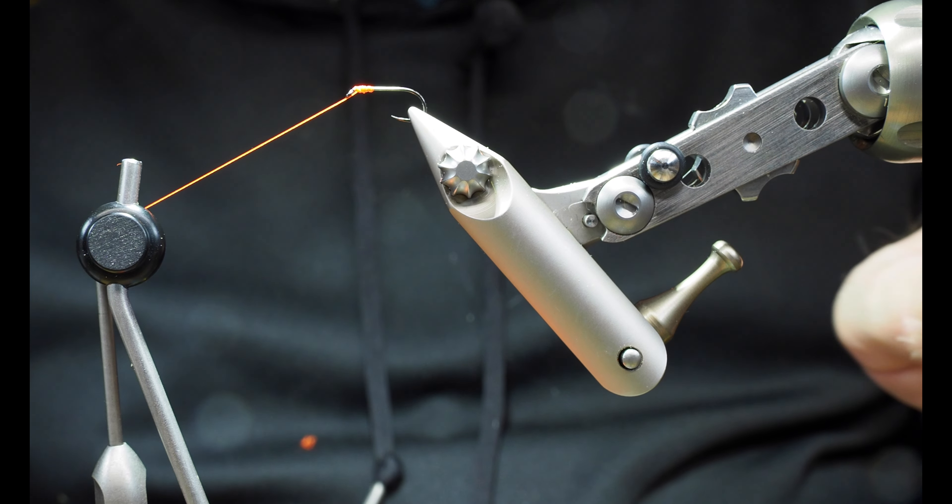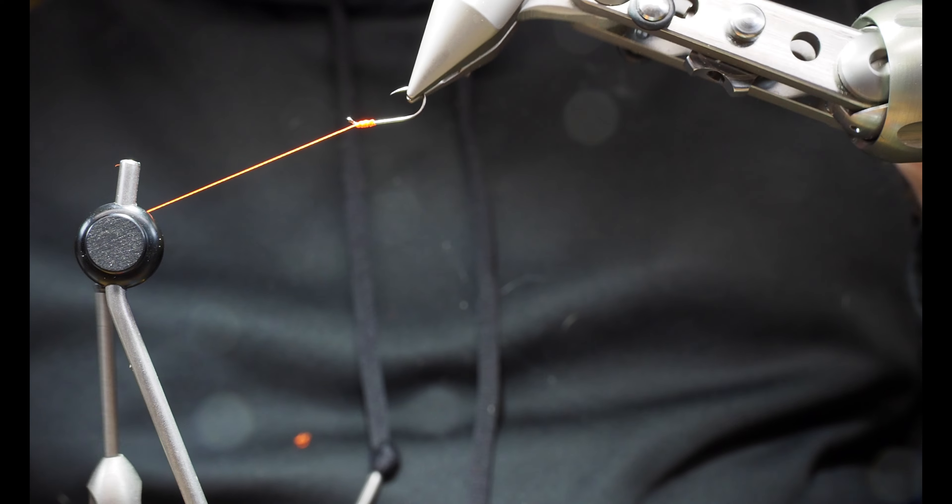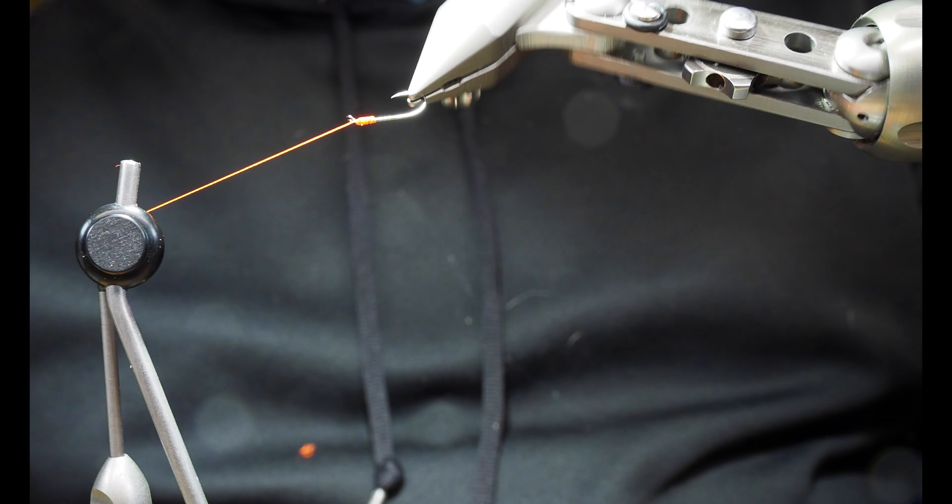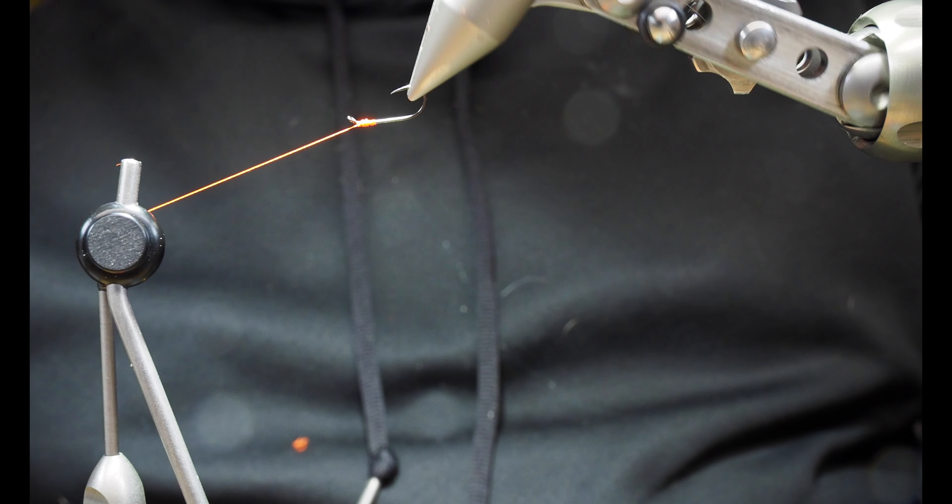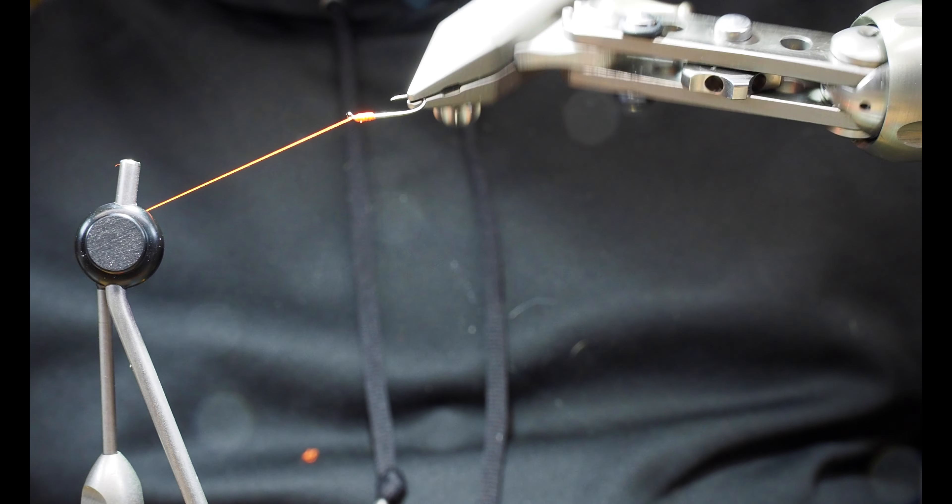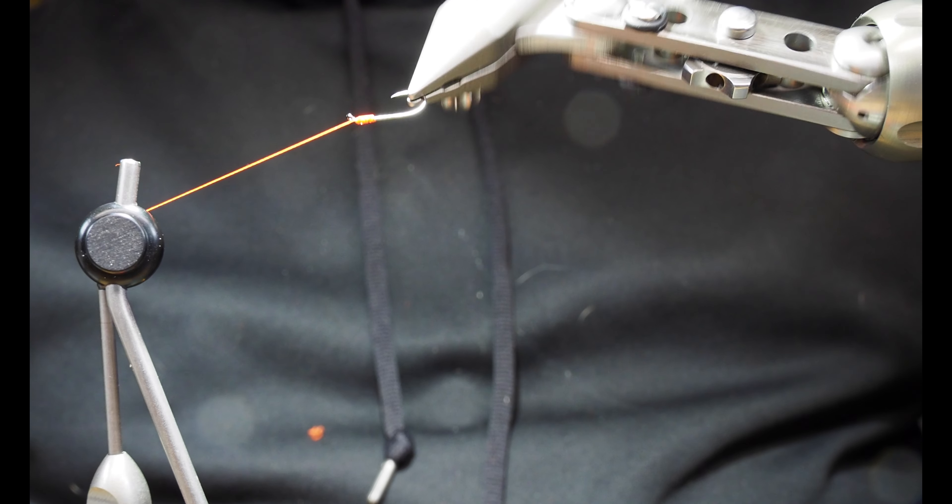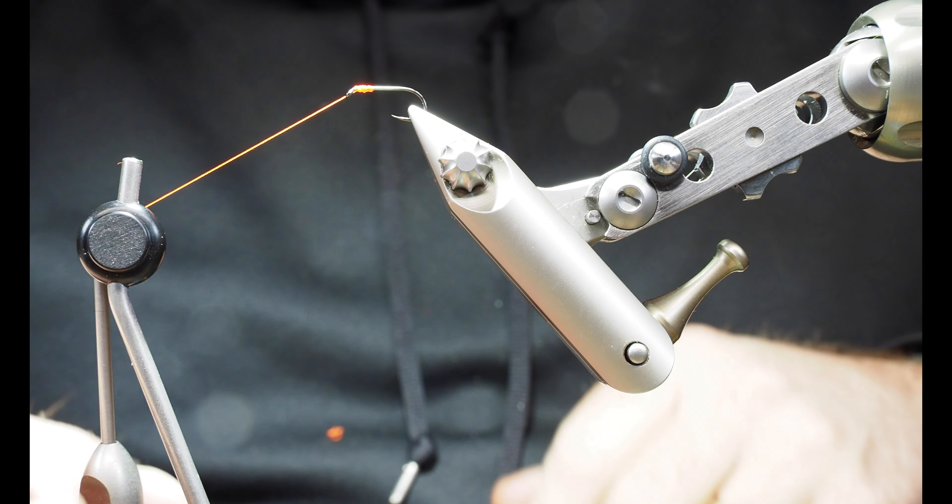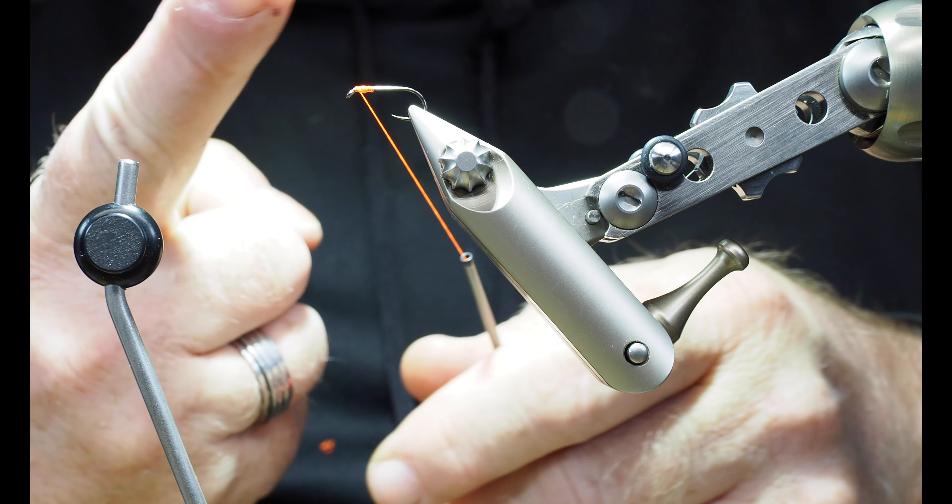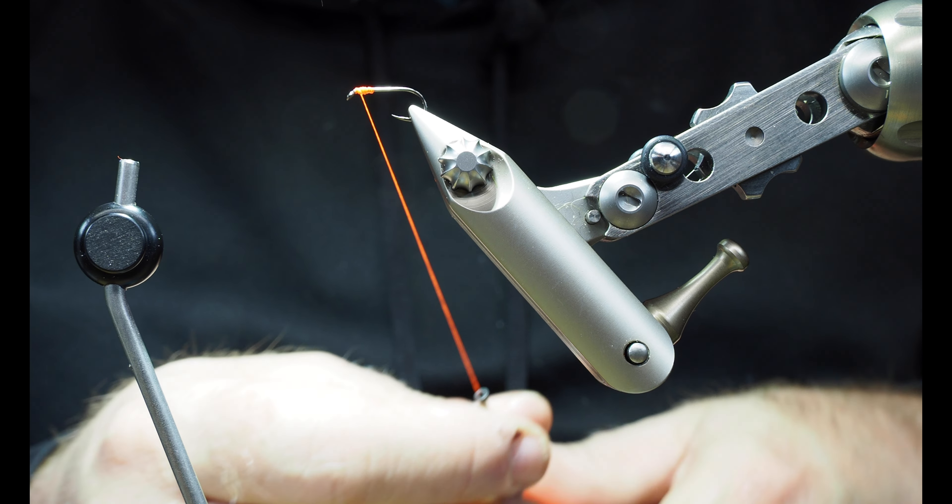But the nice thing is what that half hitch did for me was it's going to allow me to rotate this vise all day long without unraveling or unwinding the thread. So I'll throw a really quick whip finish in with my fingers, or a half hitch in with my fingers when I'm going to be using my bobbin cradle.